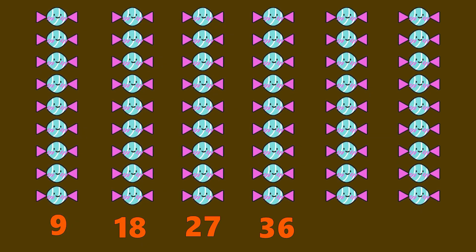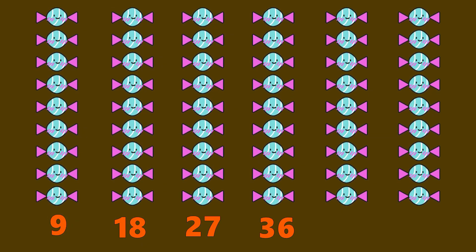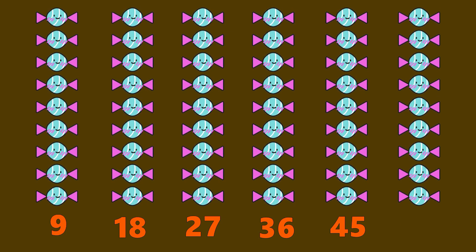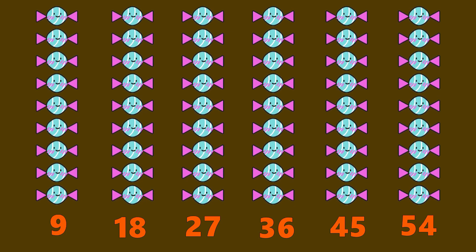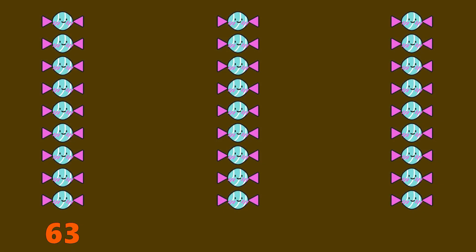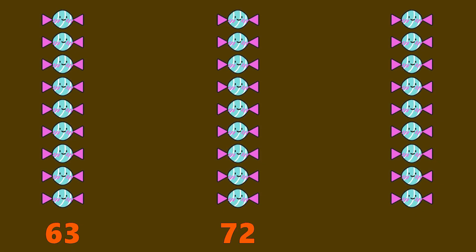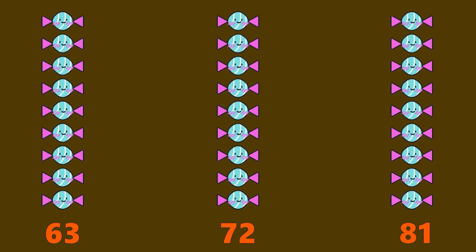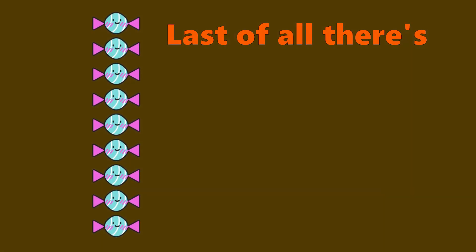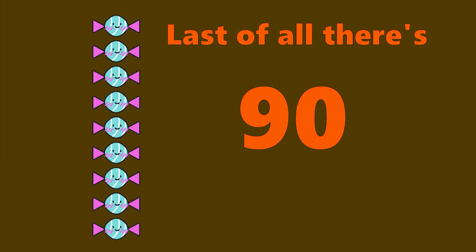9 and 18, 27, 36, 45 and 54, 63 and 72, then that's 81, and last of all, there's 90. That's how we count by 9.